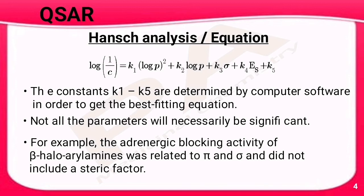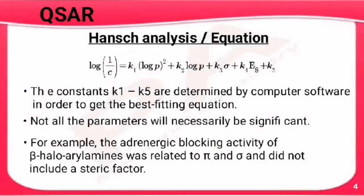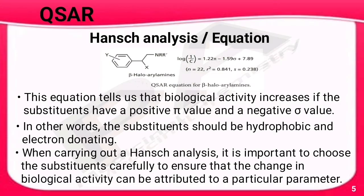Not all parameters are significant in every case. For example, the adrenergic blocking activity of beta-halo aryl amines was related to only pi and sigma, not the steric factor. For beta-halo aryl amines, the formula is: log(1/C) = 1.22·π − 1.59·σ + 7.89.